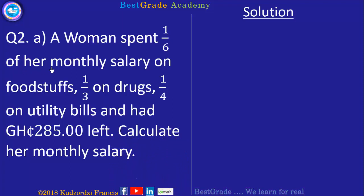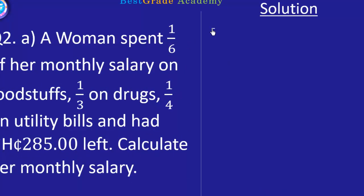A woman spent 1/6 of her monthly salary on foodstuffs, 1/3 on drugs, 1/4 on utility bills and had 285 Ghana cedis left. We are calculating her monthly salary.